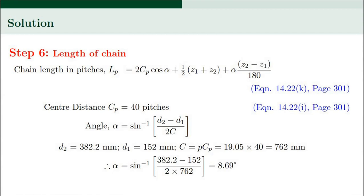In Step 6 we determine the length of the chain. The chain length in pitches is given by equation 14.22K, page 301: L_P = 2·C_P·cos(α) + (Z1 + Z2)/2 + α·(Z2 − Z1)/180, where C_P is the center distance in pitches, taken as 40. The angle α = sin⁻¹((D2 − D1) / (2C)), where D2 = 382.2 mm, D1 = 152 mm, and C = P × C_P.